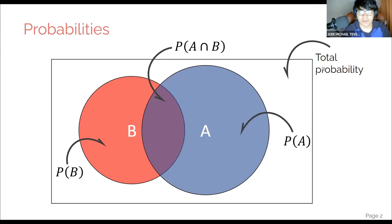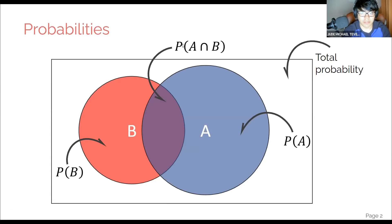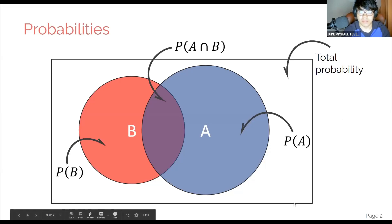Let's start with probabilities. Just to remind you, given two sets, this is the intersection. We use this concave symbol to denote intersection. This is the probability of the intersection of set A and set B, and then the probability of set A and the probability of set B. The whole space is the total probability — this whole square thing here.